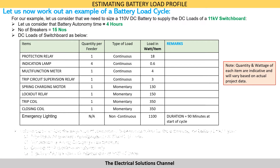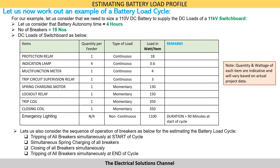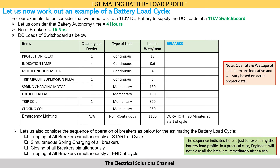Let us consider the sequence of operation of the breakers for estimating the battery load cycle. We will consider tripping of all breakers simultaneously at the start of the cycle, followed by simultaneous spring charging of all the breakers, then closing of all breakers simultaneously, and finally tripping of all breakers simultaneously at the end of the cycle.